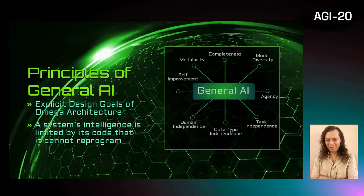We arrived at the following principles of general AI: completeness, model diversity, modularity, and self-improvement — to replace heuristic programmers with AI, as in Schmidhuber's Alpha architecture, which is based on the fully general theory of algorithmic probability, or AIT.